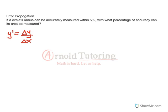So what are we trying to do here? Well, we're trying to see, we've got how accurately the radius of a circle can be measured. It can be measured to within 5% of its actual measurement or its actual length, and we want to know with what percentage of accuracy can the area be measured.